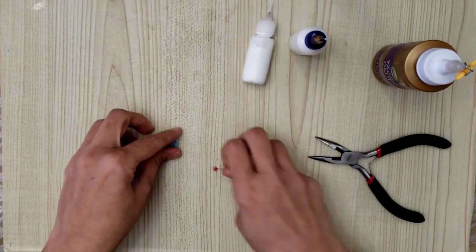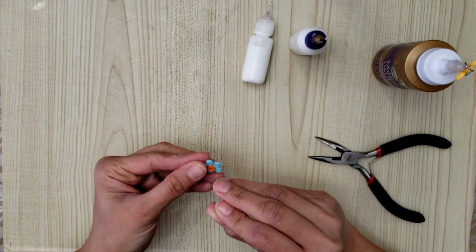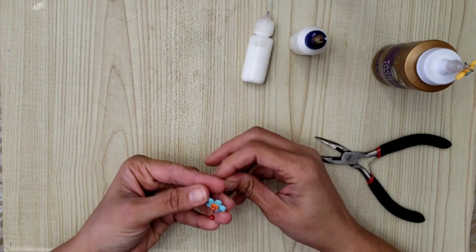Now if you don't have a jump ring, you can also use a needle. Pass it from the flower and secure it with the help of glue.